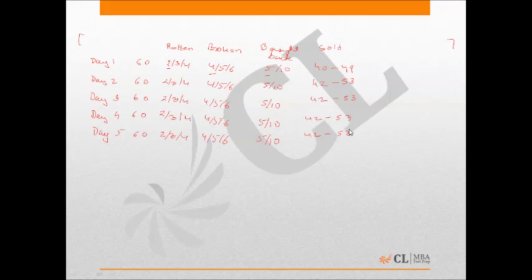One important constraint: 42 eggs cannot be sold on two consecutive days simultaneously. If 42 eggs are sold on one day, that means 10 eggs are brought back. If 10 eggs are brought back, then next day there will be 4 extra eggs to sell — meaning the minimum possible the next day is 44, not 42.